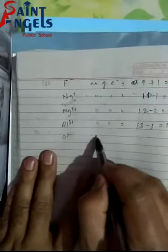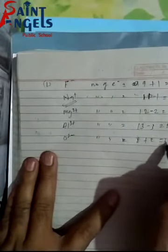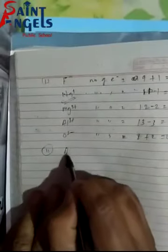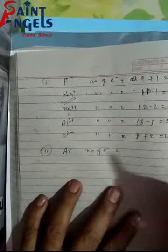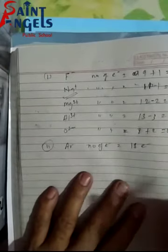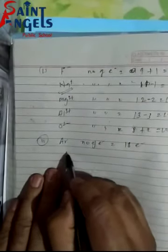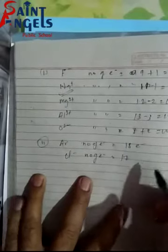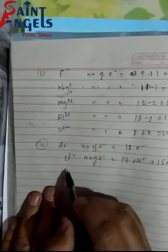O2− का atomic number 8, 2 negative charge add करने पर 10 electrons — ये भी isoelectronic species है। Argon का atomic number 18 है, तो इसमें 18 electrons होते हैं। Chlorine का atomic number 17 है; यह एक electron gain करे तो Cl− में 18 electrons हो जाते हैं — यह Argon का isoelectronic species है।